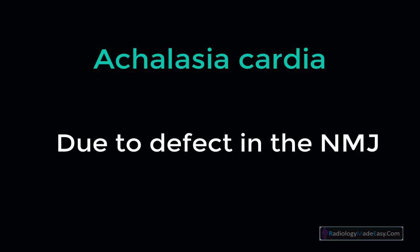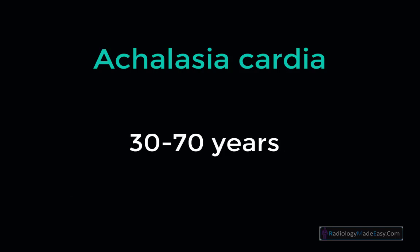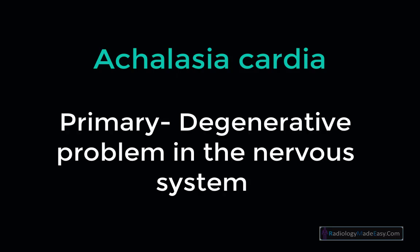When we talk about achalasia, it involves a defect at the neuromuscular junction — specifically, the lower esophageal sphincter has an inability to relax. This persistently constricted sphincter at the lower esophagus ultimately causes dilatation of the proximal esophagus. It is common in patients aged 30 to 70 years.